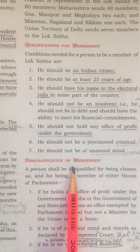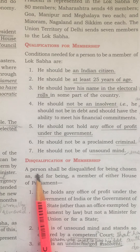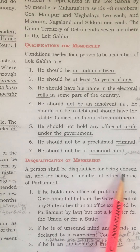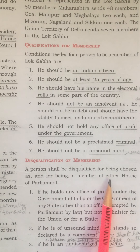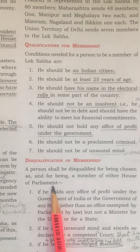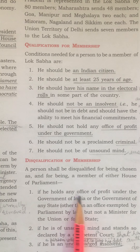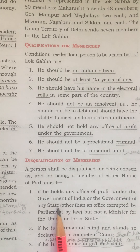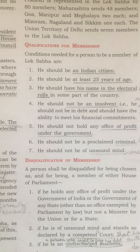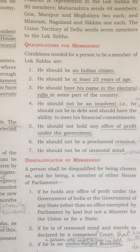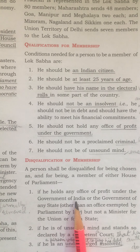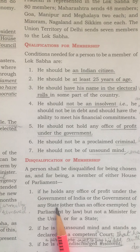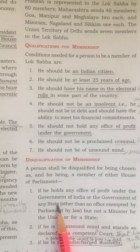Next, we have the disqualification of membership. A person shall be disqualified for being chosen as and for being a member of either house of parliament if he holds any office of profit under the government of India or the government of any state, but not a minister for the union or for a state. So if a member of Lok Sabha or Rajya Sabha holds an executive post under the central or state government, he will be disqualified from membership of the Lok Sabha.